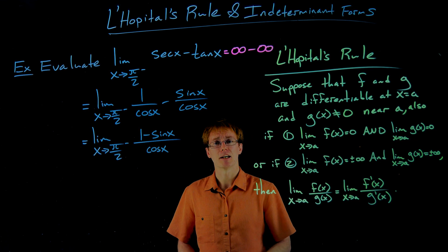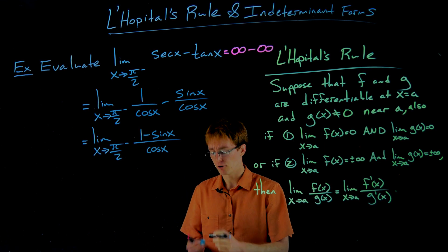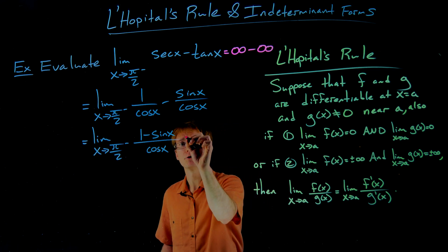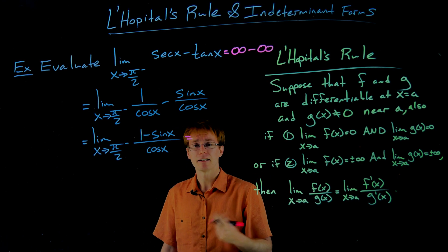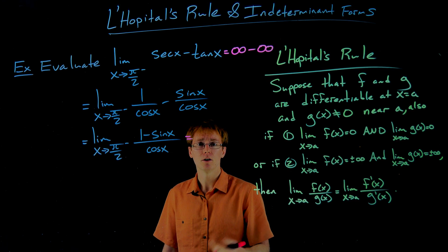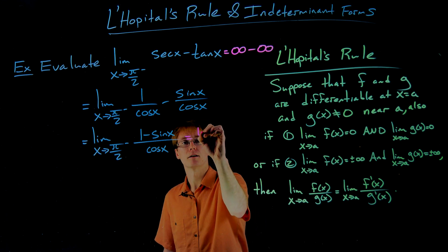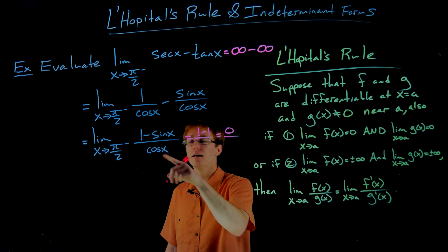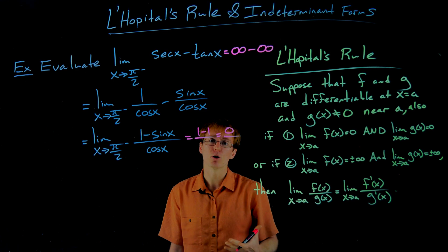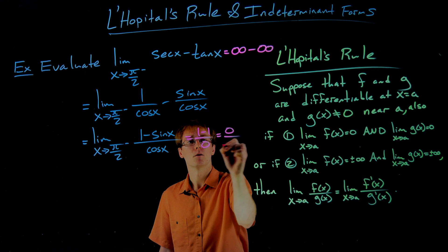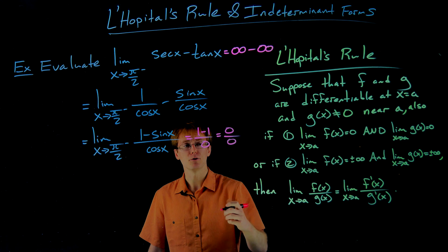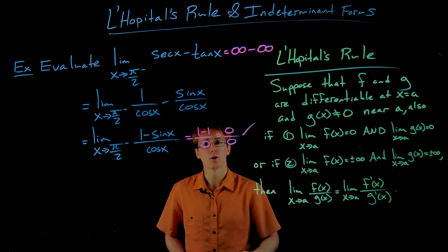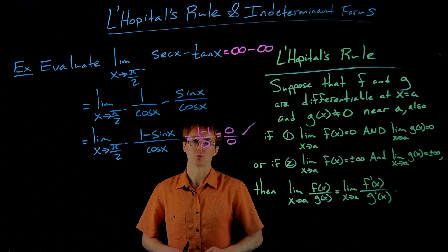We put those fractions together with their common denominator. Now if we attempt direct substitution: sine at π/2 becomes 1, giving us 1 minus 1, or 0, in the numerator. Cosine at π/2 is also 0. So we do now have the indeterminate quotient 0 over 0, and we can invoke L'Hôpital's rule.